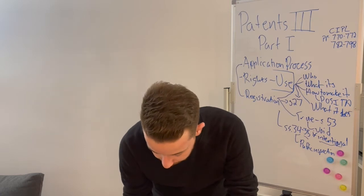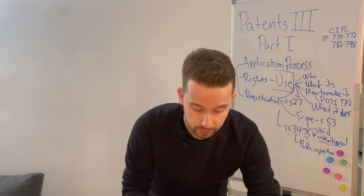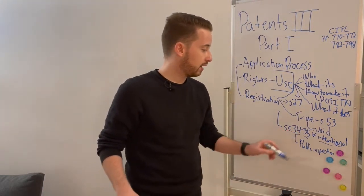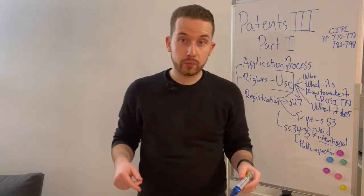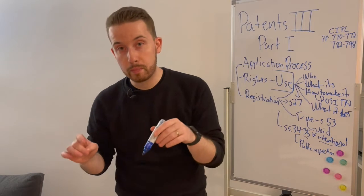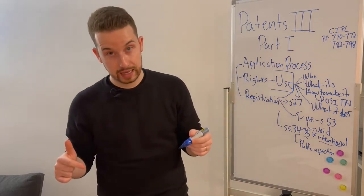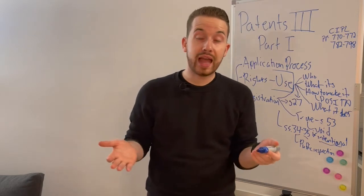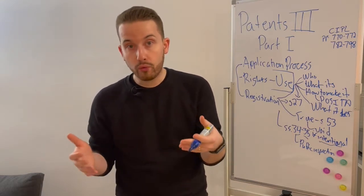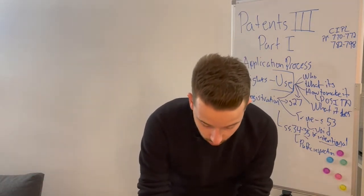Under section 73, there is deemed abandonment. If you file your patent application, the government requests more information, and you don't respond within six months, you're deemed to have abandoned your application and the government can dismiss it. There is a mechanism for reinstatement by proving good faith, but by default, if you don't respond within six months, the whole application is terminated — generally permanently.